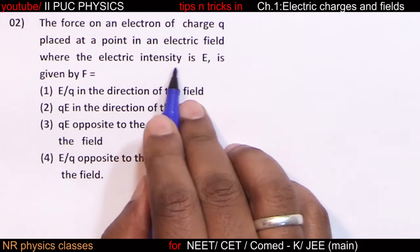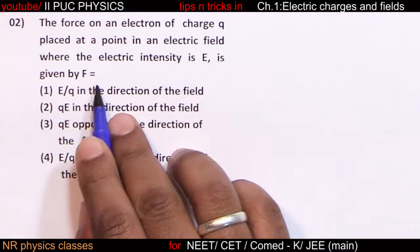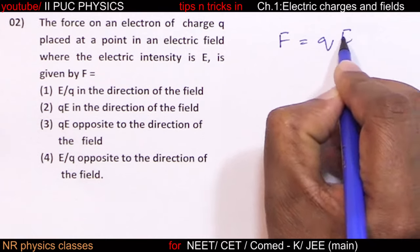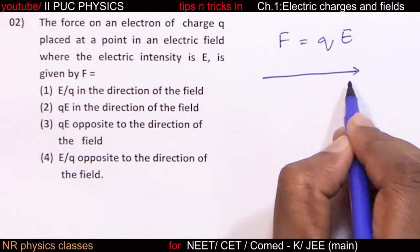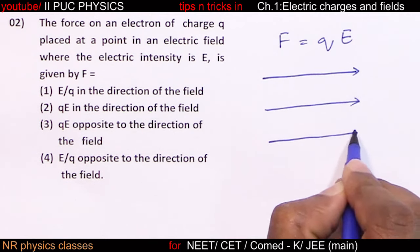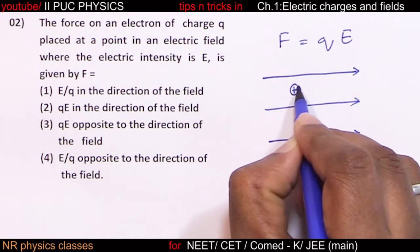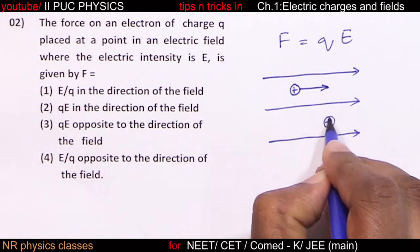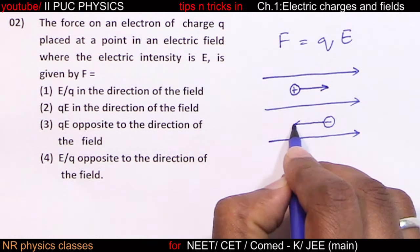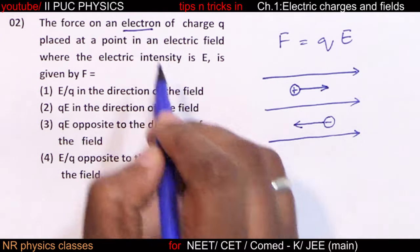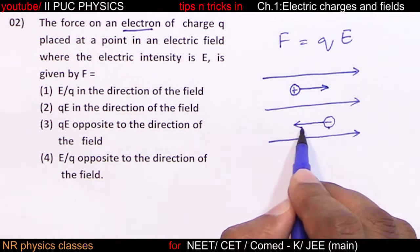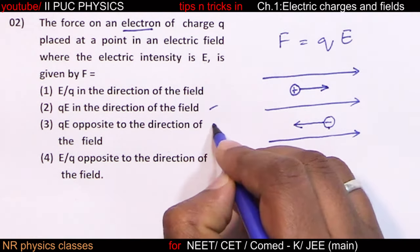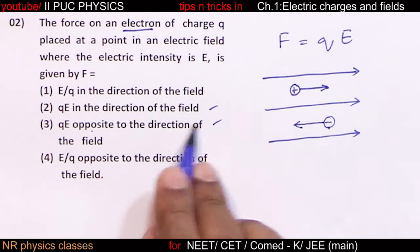The force on an electron of charge Q placed at a point in an electric field where the electric intensity is E is given by force equal to charge into electric field. If there is a positive charge, that positive charge experiences force in the direction of the field, and a negative charge experiences force against the direction of the field. Since an electron is negatively charged, force is opposite to the direction of electric field.